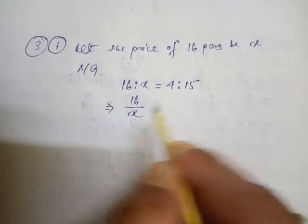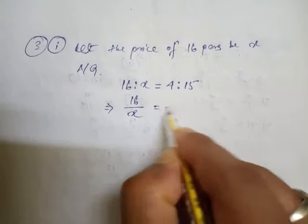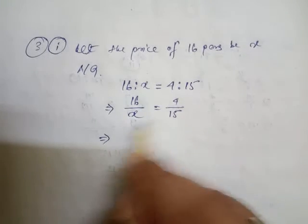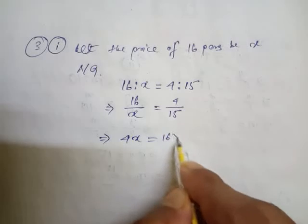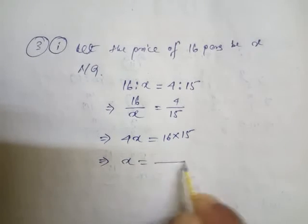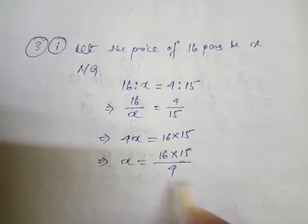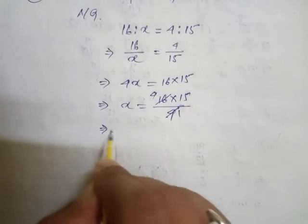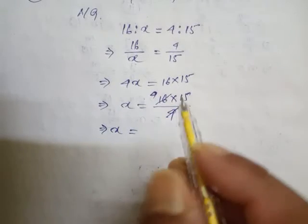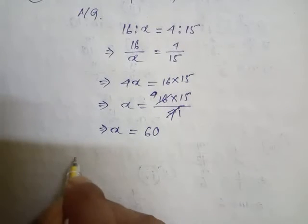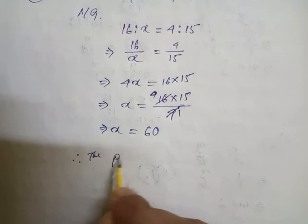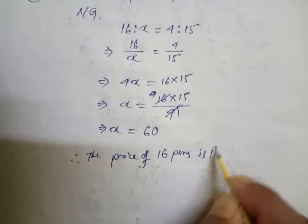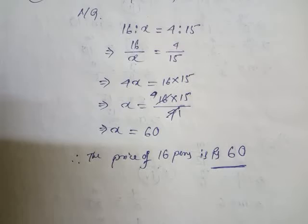We apply the concept of proportion: 16 is to x equal to 4 is to 15. Now we go for cross multiplication: 4x equals 16 into 15. So x equals 16 into 15 divided by 4. Since 16 and 4 are both multiples of 4, we simplify: x equals 4 into 15 equals 60. Therefore, the price of 16 pens is rupees 60.